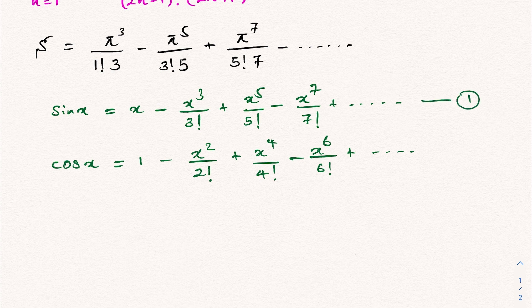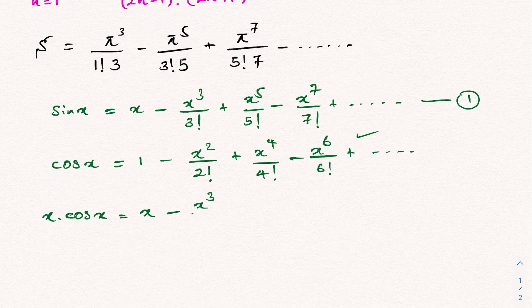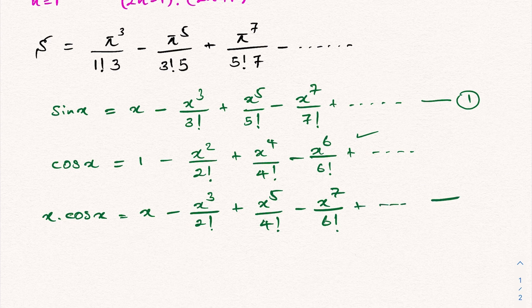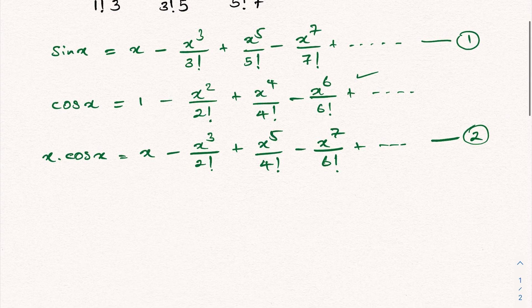Now, we also have the expansion of cosine of x, and I'm going to multiply both sides by x. So x times cosine(x) equals x minus x³ over 2! plus x⁵ over 4! minus x⁷ over 6! plus so on. I'm going to label this equation number two.